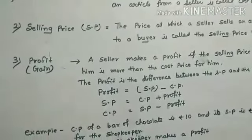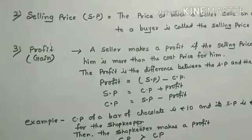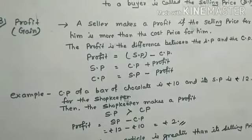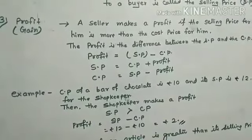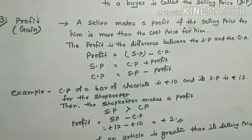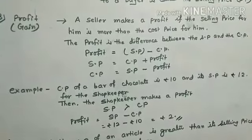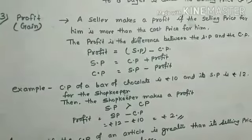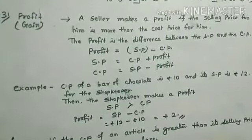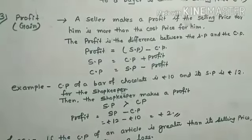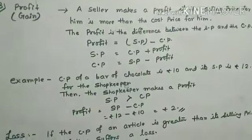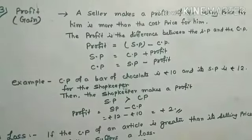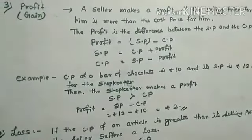You know what profit is. A seller makes a profit if the selling price is more than the cost price. Profit is the difference between the selling price and the cost price: Profit = SP − CP. To find SP: SP = CP + Profit. To find CP: CP = SP − Profit.